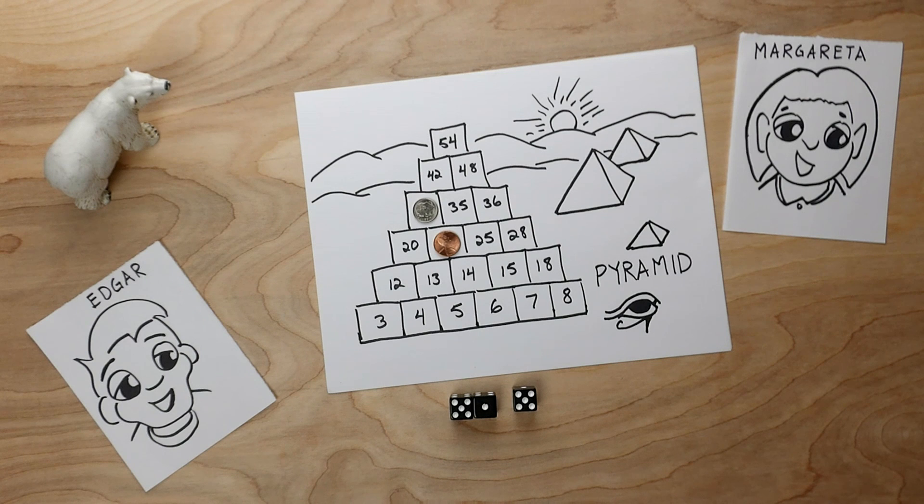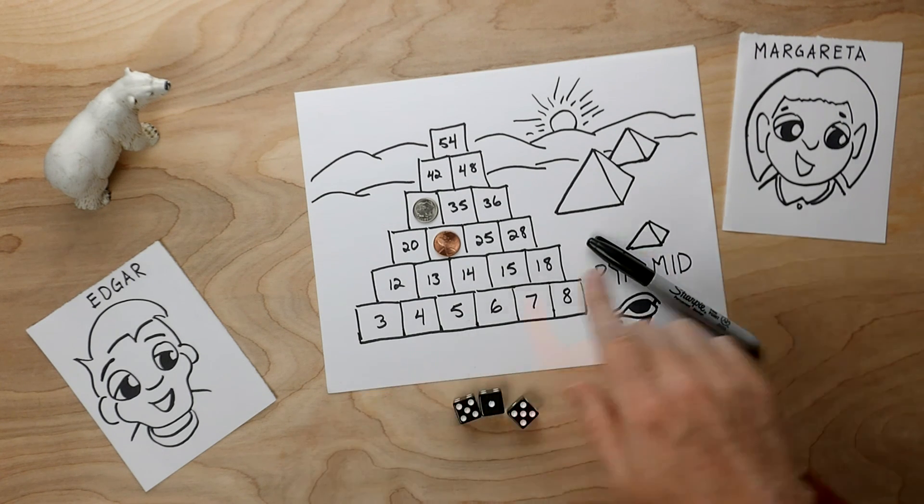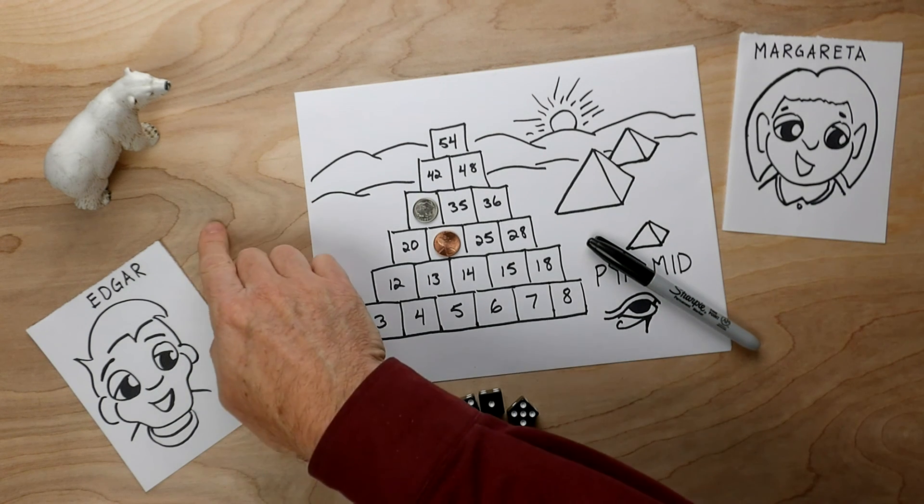So this is the game of pyramid. And for this game, you'll need some paper. You'll need something to write with, some dice, some friends to play with, and you'll need a bear probably too.